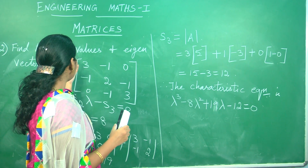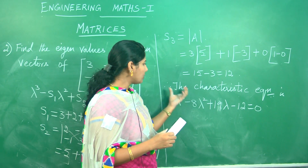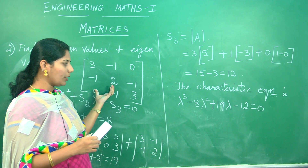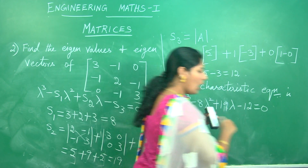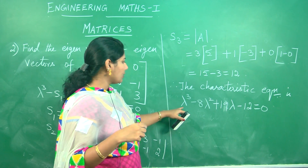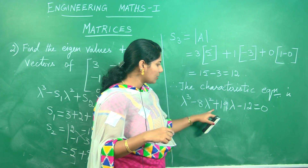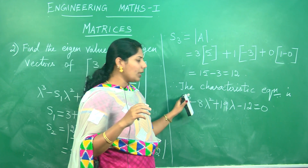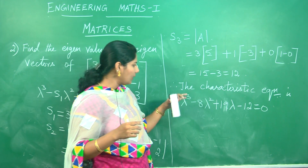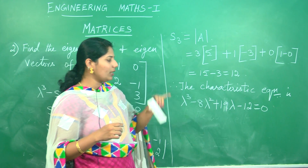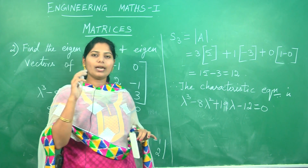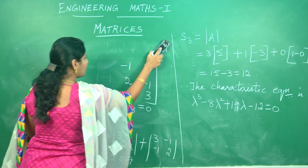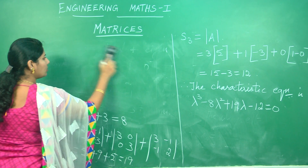This is the characteristic equation to find the eigenvalues. Since it is a 3 by 3 matrix, we will be getting 3 roots. The characteristic equation is lambda cubed minus 8 lambda squared plus 19 lambda minus 12 equals 0. Since the highest degree is 3, we find the roots only by synthetic division. First, take the coefficients alone of the characteristic equation.